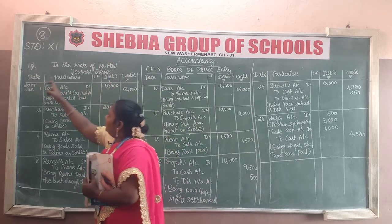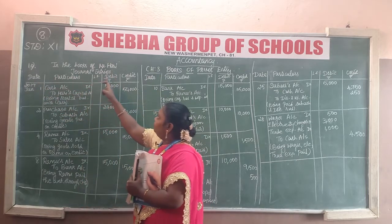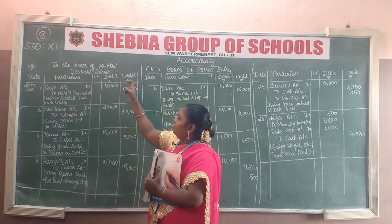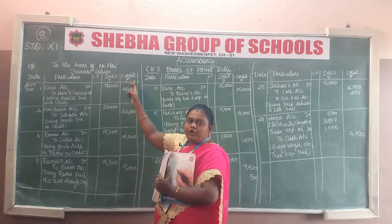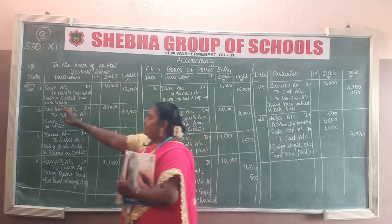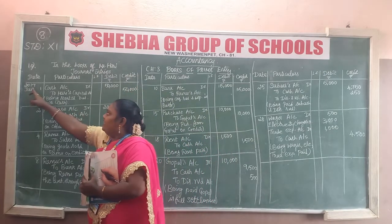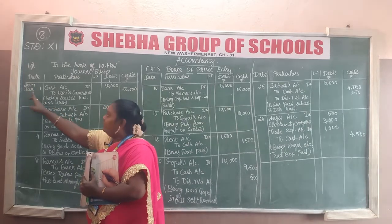The journal entry format includes: Date, Particulars, LF, Debit, and Credit columns — each column is supported and must be filled regularly. You need to write the year 2017, January 1.